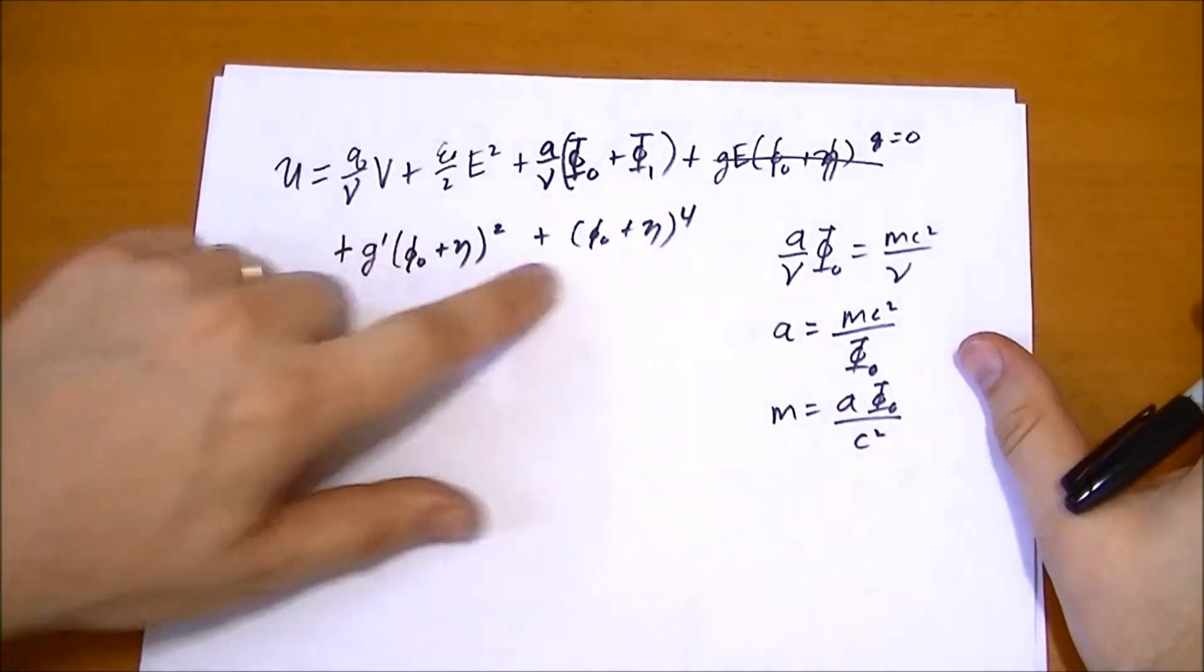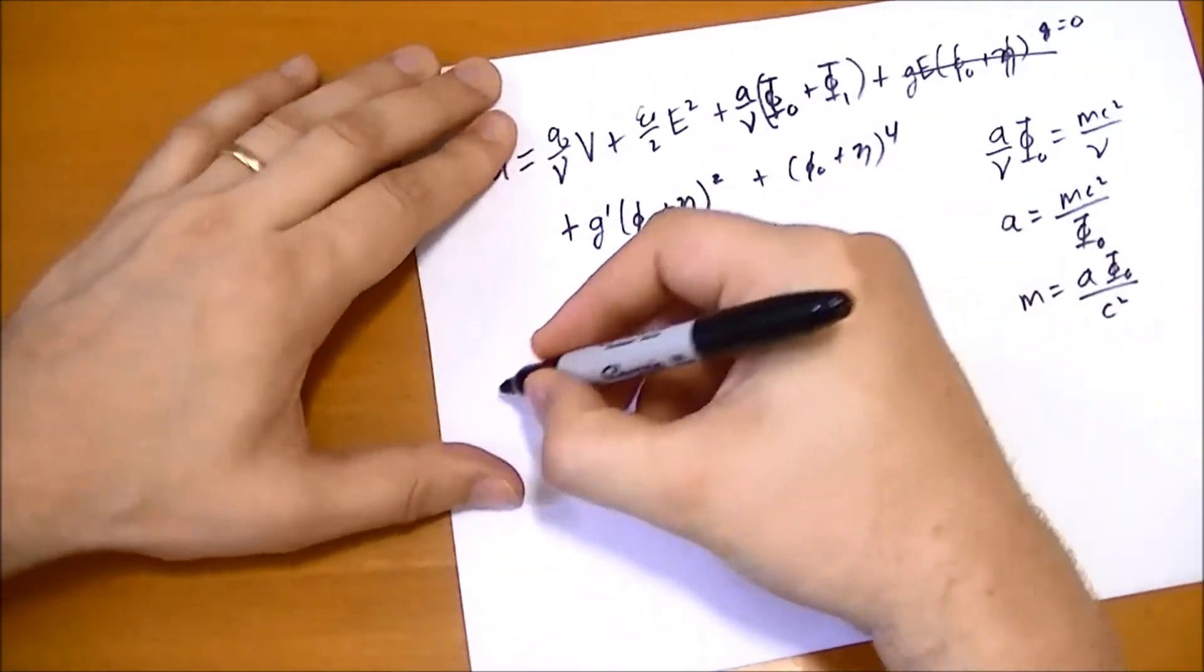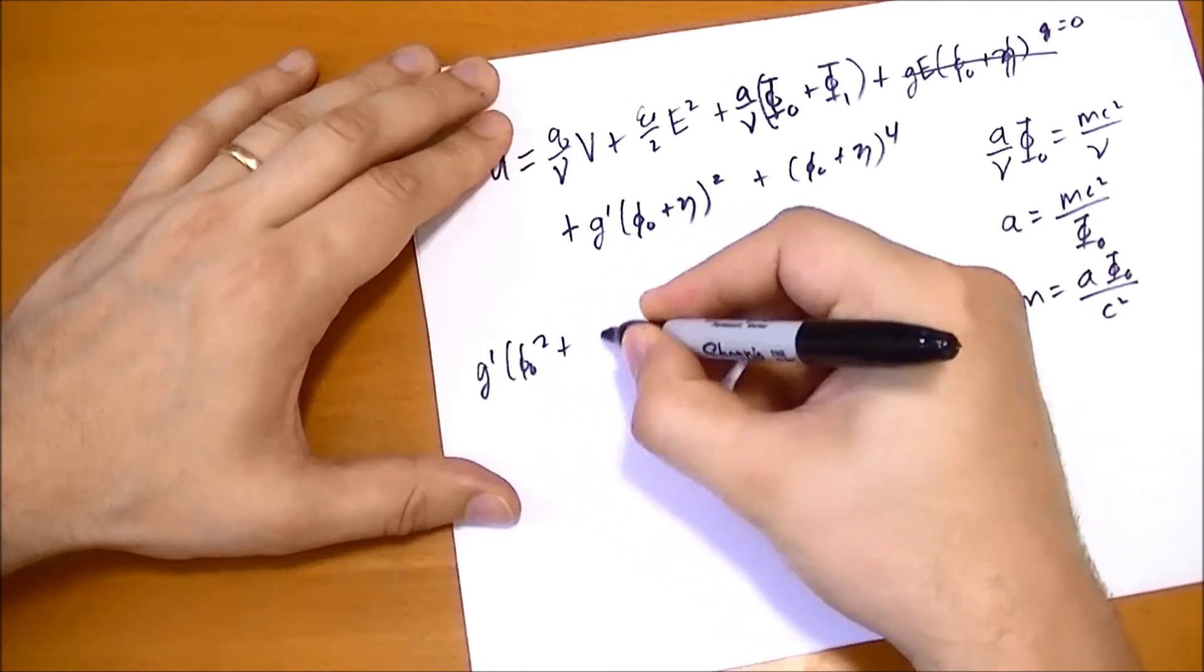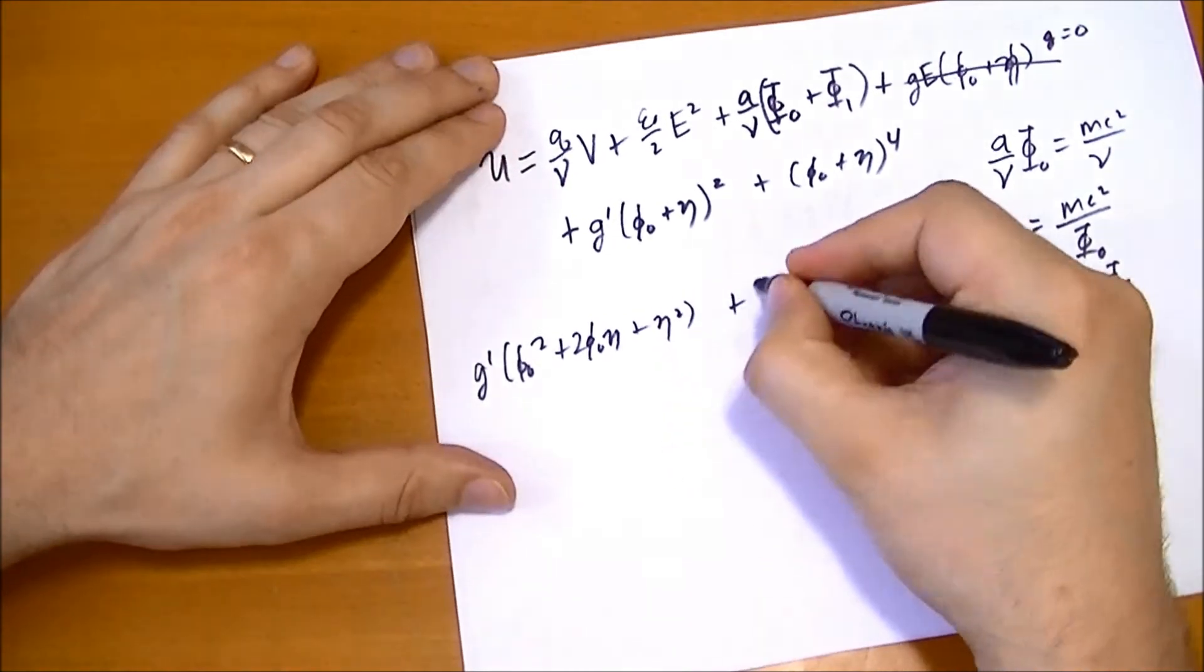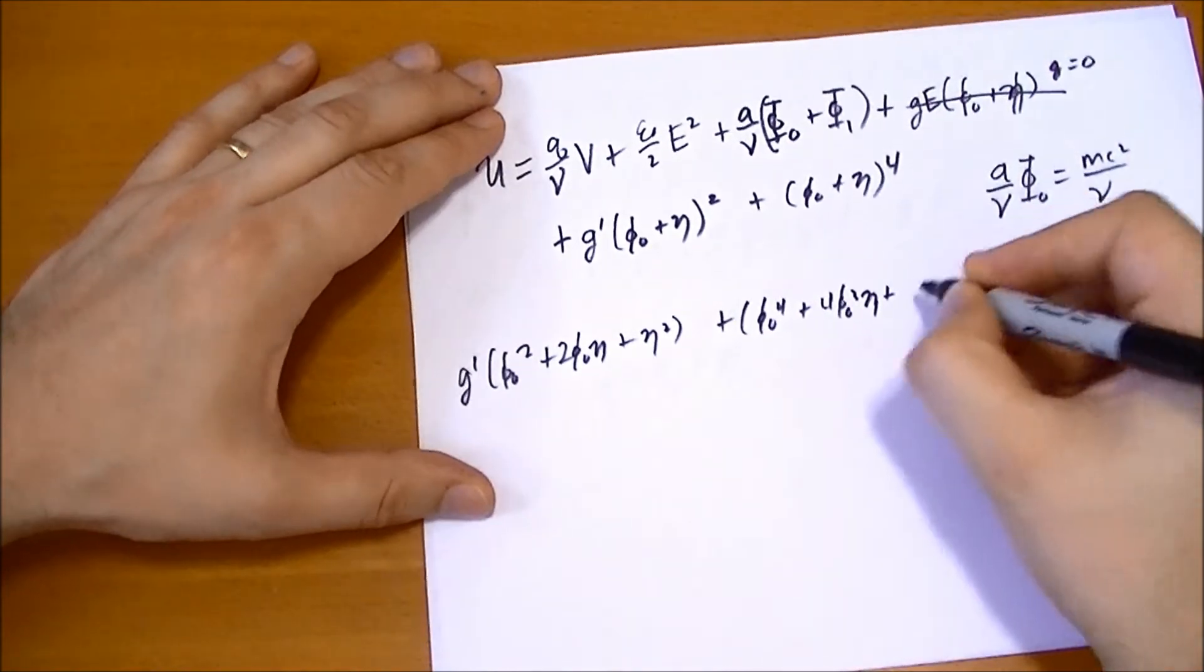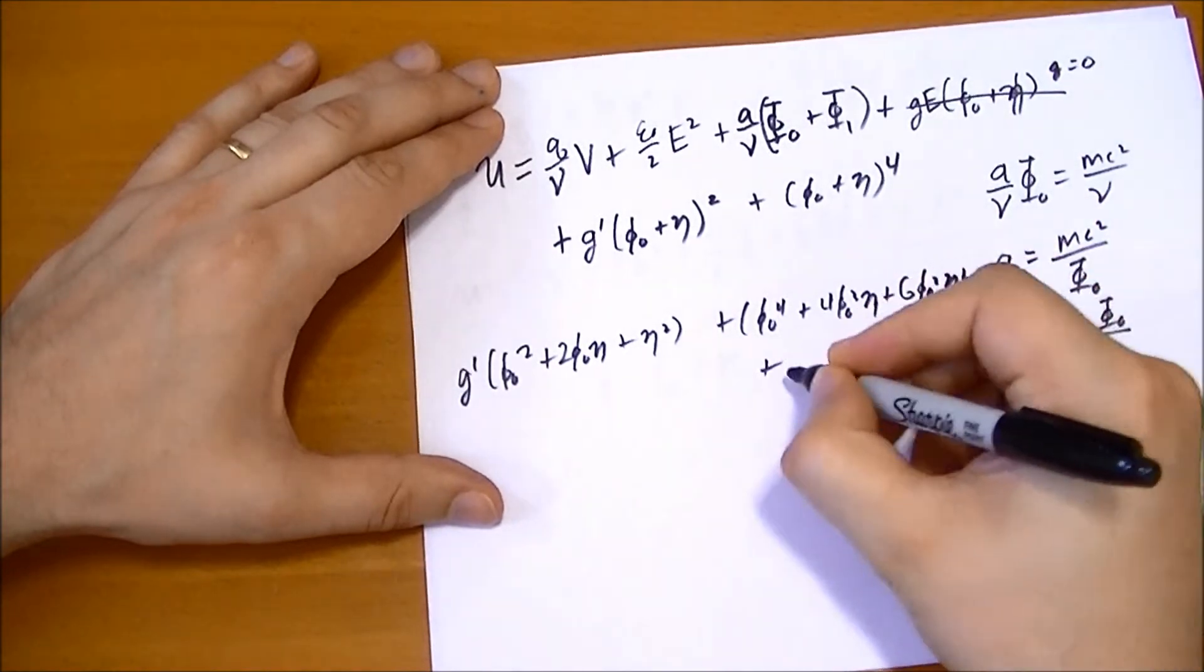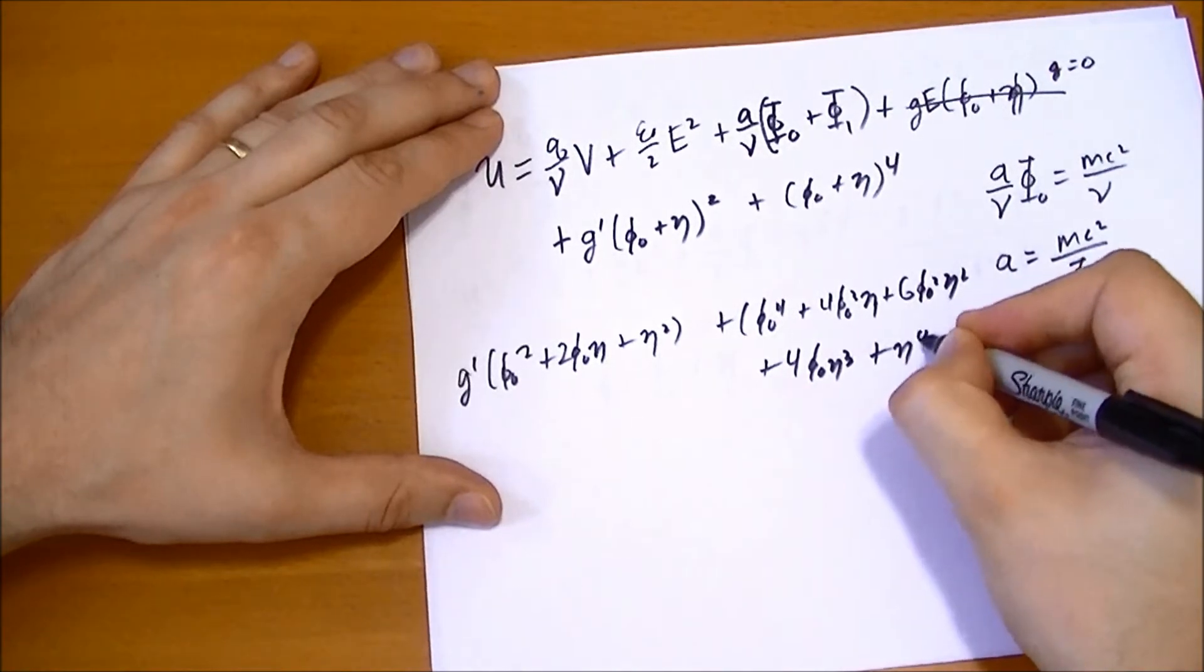Now let's write out these polynomials in their full, beautiful form. So we have g prime of phi naught squared plus phi naught eta, two of these, plus eta squared. And then we have phi naught to the fourth plus four phi naught to the third eta plus six phi naught squared eta squared plus four more phi naught eta cubed plus eta to the fourth.